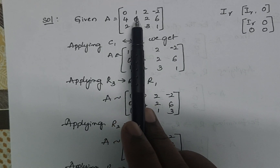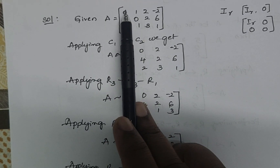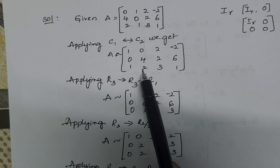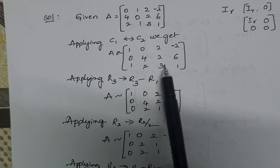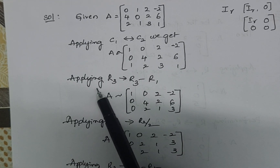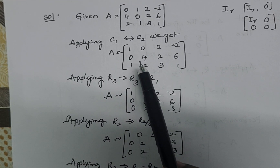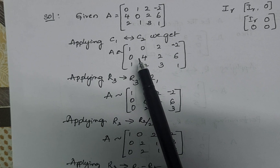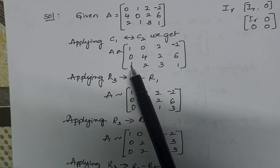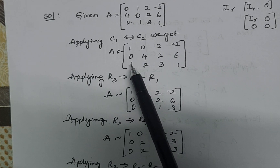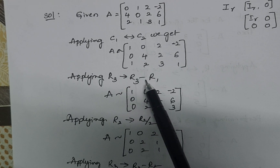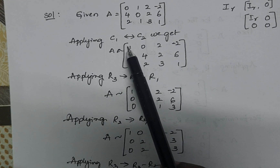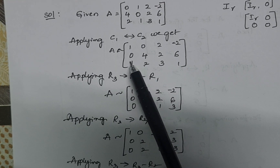After the interchange, the first column becomes [1, 0, 1] and the second column becomes [0, 4, 2]. For our convenience, we are interchanging the columns. The remaining columns are the same. Now apply R3 → R3 - R1, with the aim to make this element zero.